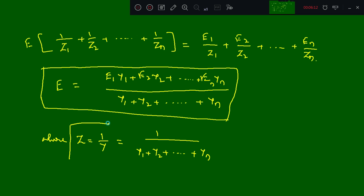Here Y1 is nothing but 1 divided by Z1, Y2 is nothing but 1 divided by Zn. This is the proof of Millman's theorem.